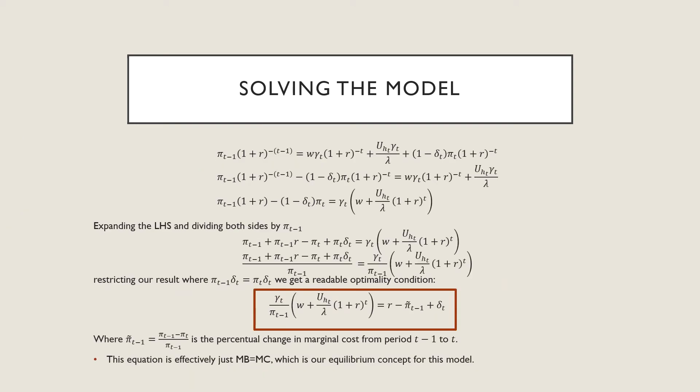Further solving the model, we have this condition and we're going to move all of our pi terms over to one side. This is effectively what we've done - we've had our marginal benefit equal to our marginal cost here. Formally, if we expand out our left hand side and we divide both sides by this cost of investment in period t minus one, we get the following result. Now what we're going to do is that we want to restrict our result to the case where our cost of depreciation in period t minus one terms is going to be equal to the cost of depreciation in period t. Thus we get a readable optimality condition which we will be using.